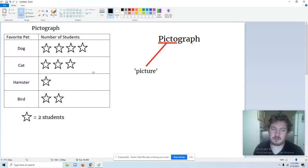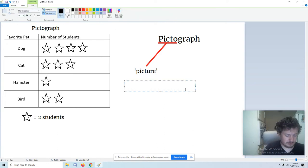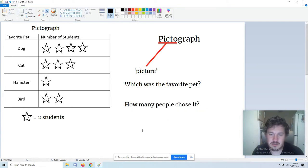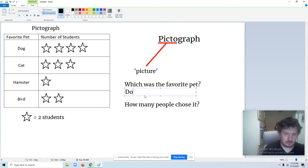So this is how a pictograph works. Your question might be, let's write our question out. Which was the favorite pet? And how many people chose it? Let's find our answer. For favorite, that means the most people picked it. So let's look for the biggest number of stars. We can see that it's dog along the top, because that has four stars, and the closest one only has three. So dog is the favorite. That's our answer.